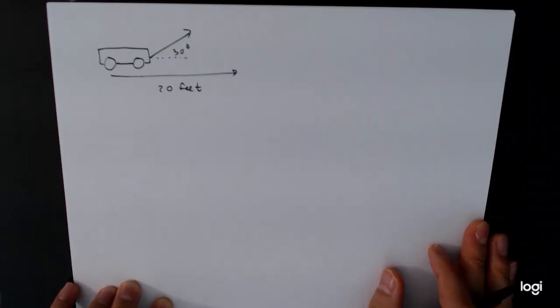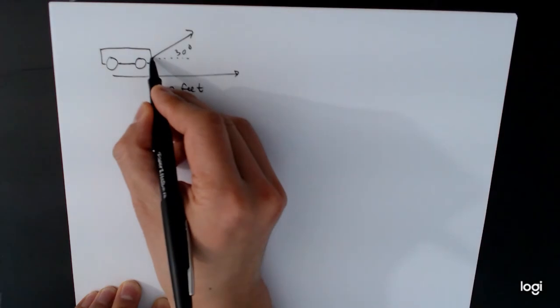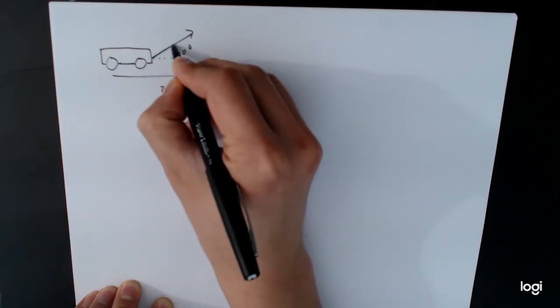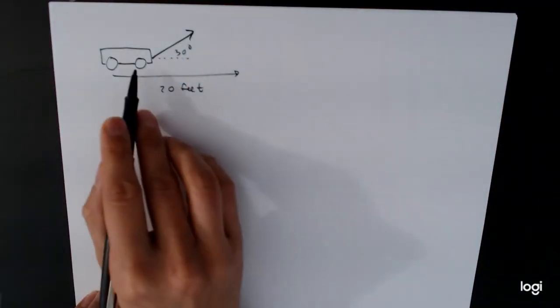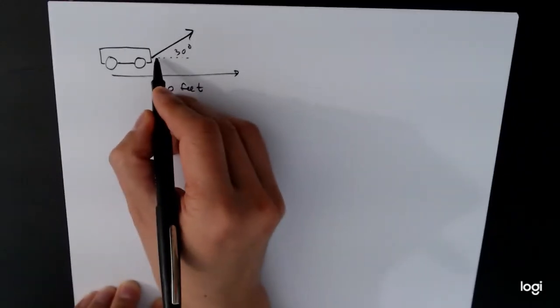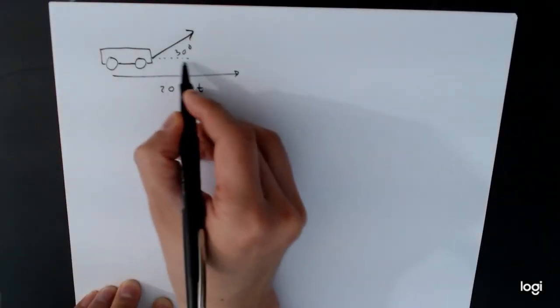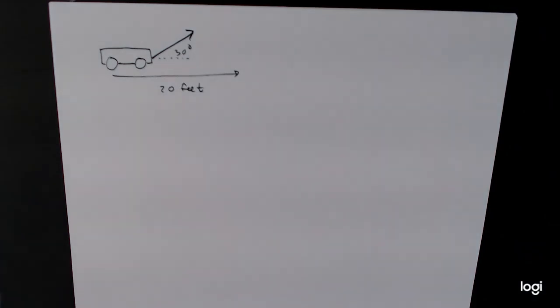Alright, so here's a picture of what this looks like. Now the force that we're pulling the cart with is pulling up like this, but the cart's only moving horizontally. So there's a very real sense in which only the horizontal part of this force is being put to work for us, is actually accomplishing something for us.